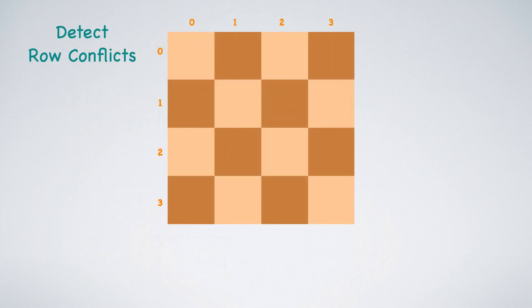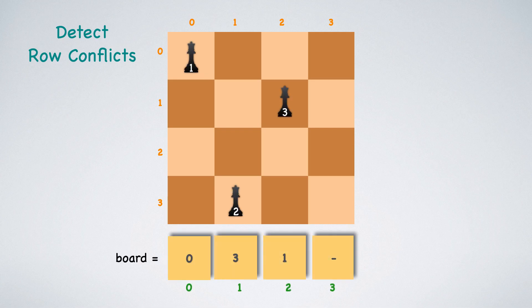Consider a scenario where we have successfully placed three queens and updated their row values in the board array. Our objective is to now position the fourth queen in a safe cell. Whenever a queen is placed in a cell, its row value is updated in the board array. We scan the row numbers of all the columns before the current column. If any of these row numbers match, it indicates a conflict. For example, observe the row conflicts as I move the fourth queen across all the rows.